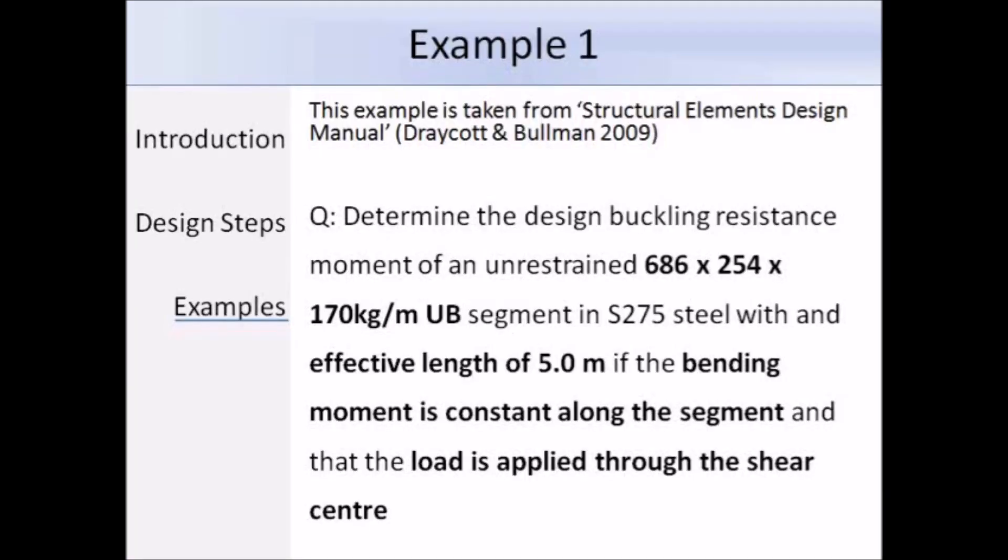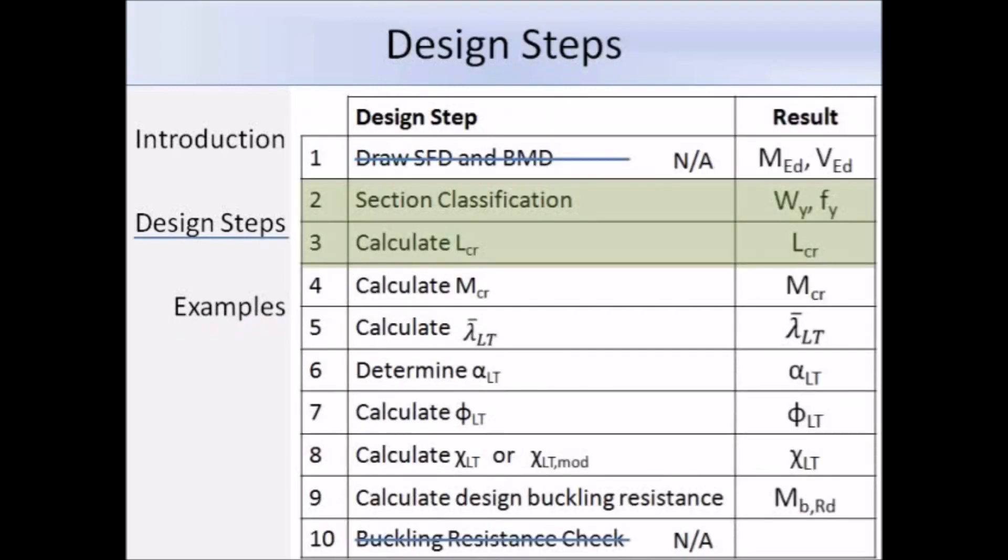So this is the first example, taken from Structural Elements Design Manager by Drycut and Bulman, and it's asking us to determine the design buckling resistance of an unrestrained 686 x 254 x 170 UB segment in S275 steel with an effective length of 5m if the bending moment is constant along the segment and if the load is applied through the shear centre. For this question, we don't have a design moment to compare the design buckling resistance to, so we can rule out steps 1 and 10.